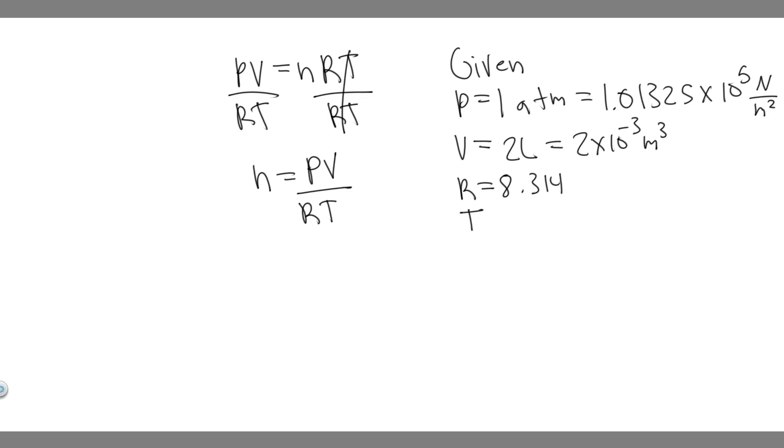And then T is going to be the temperature. They give us it's 37 degrees Celsius. But keep in mind, you have to solve this in Kelvin. So the way to convert from Celsius to Kelvin, you just have to add 273.15. So now this is basically in Kelvin.